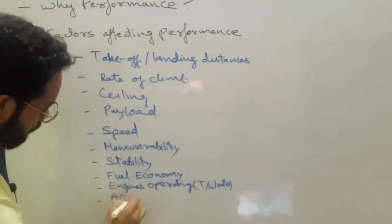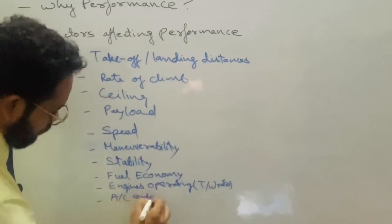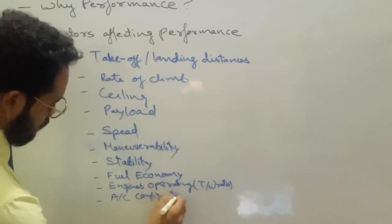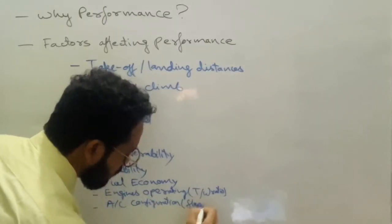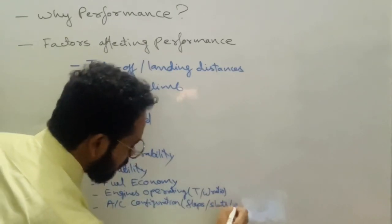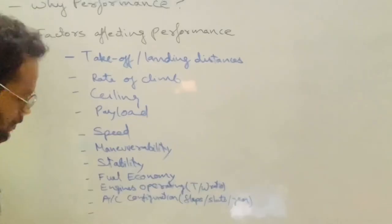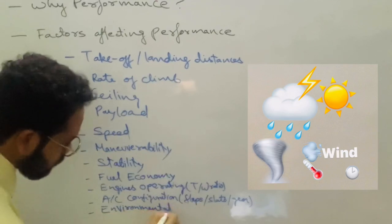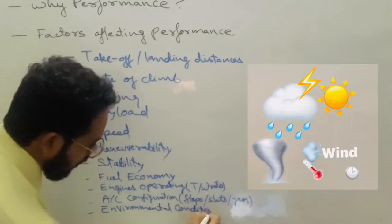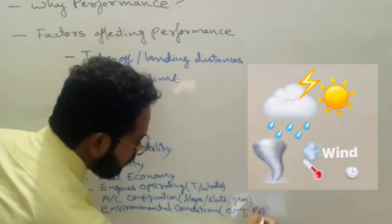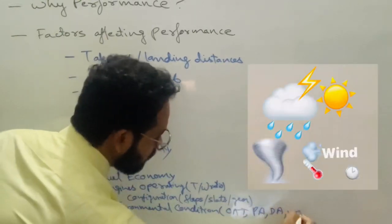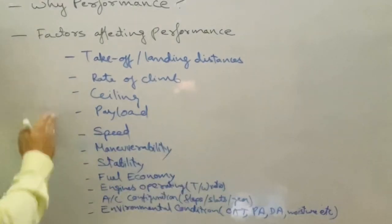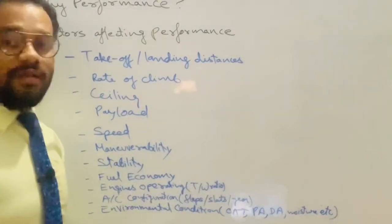Additional factors include aircraft configuration — such as flaps, slats, or gear — and environmental conditions like OAT (outside air temperature), pressure altitude, density altitude, moisture, etc. So all these are the factors which affect airplane performance.